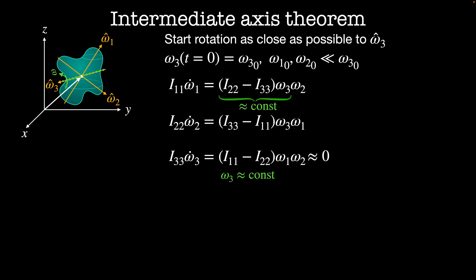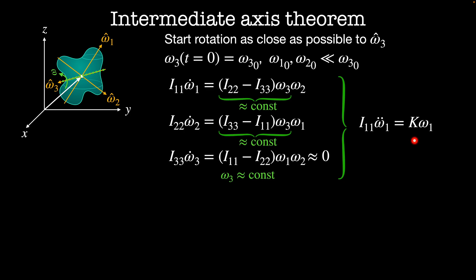If omega_3 is constant, then i11 minus i33 times omega_3 is a constant, and likewise i33 minus i11 times omega_3 is a constant. Now we have a simple set of coupled equations for omega_1 dot and omega_2 dot. Taking the derivative of the first equation and plugging it into the second gives a second order equation for omega_1: i11 times omega_1 double dot equals some constant k times omega_1. Since i33 is the largest moment of inertia, k is negative, which means this is the standard harmonic equation. So omega_3 doesn't change, and we have a small rotation that oscillates back and forth between omega_1 and omega_2 in the transverse direction.